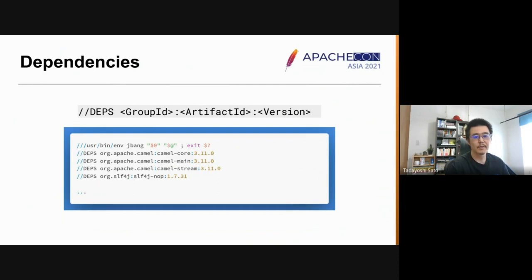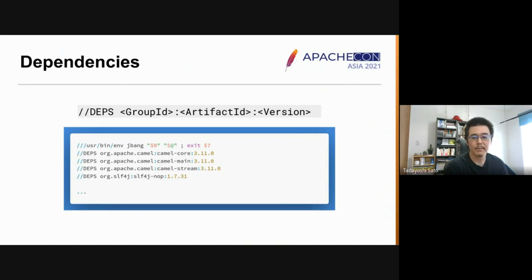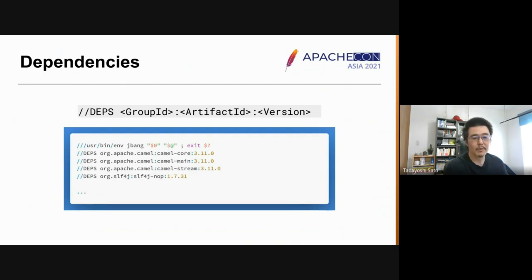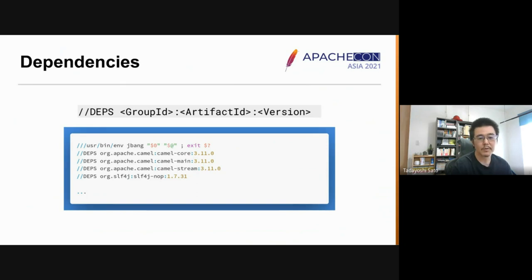As soon as you try to write more serious code, you will need some external libraries. The essential feature of JBang is that you can define dependencies with the `//DEPS` instruction in the header part of the script file, using Maven GAV coordinates — group ID, artifact ID, and version. So you can leverage the full power of the Java ecosystem.